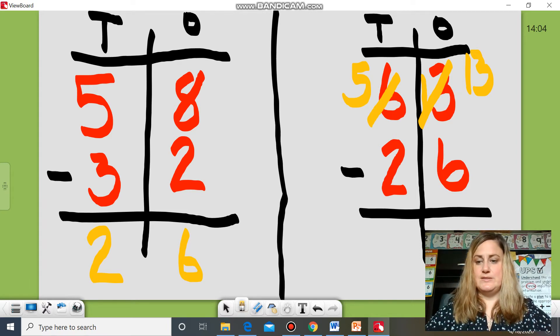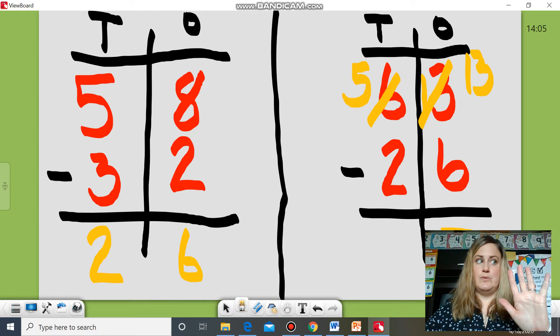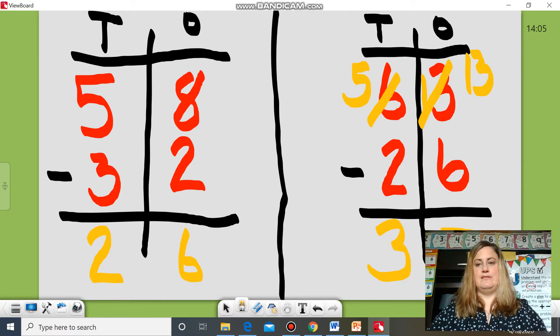My answer in the ones place is seven. Now I go to my tens place and subtract five and then I can take two away. One, two. I have three left. So my answer is 37.